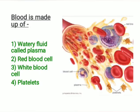Our blood is made up of a watery fluid called plasma and billions of tiny blood cells. The types of blood cells in our body are red blood cells, white blood cells, and platelets.